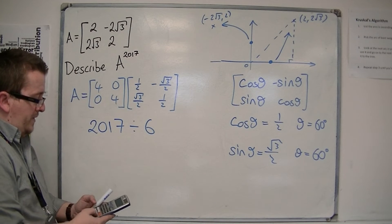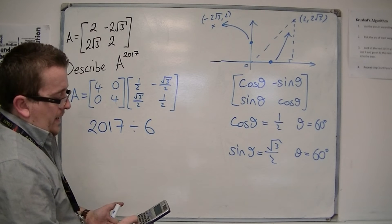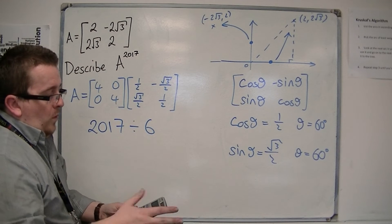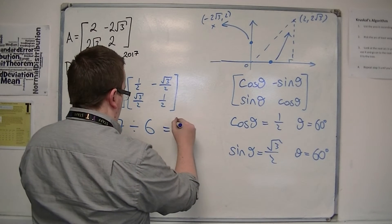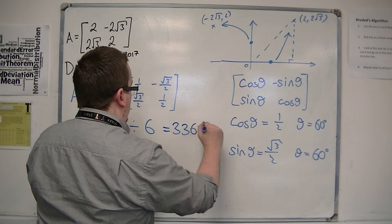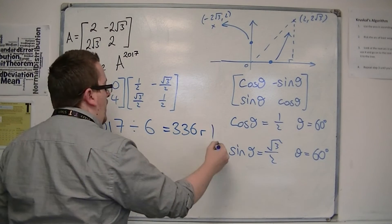what do I get? So, 2017 divided by 6 is 336.166666. So, that means that this is 336 remainder 1.